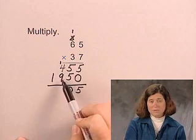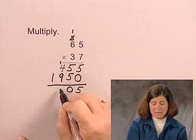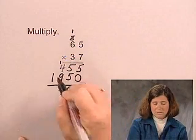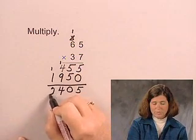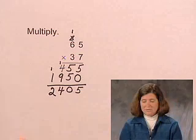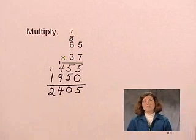1 plus 4 is 5, plus 9 is 14. And 1 plus 1 is 2. So 65 times 37 is 2,405.